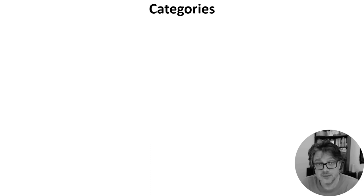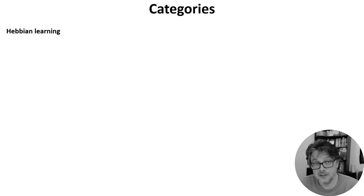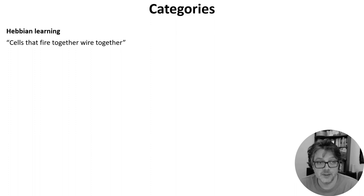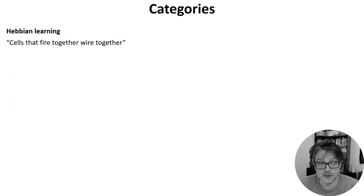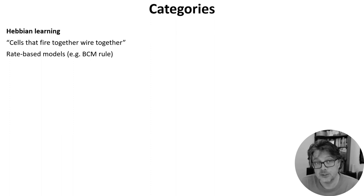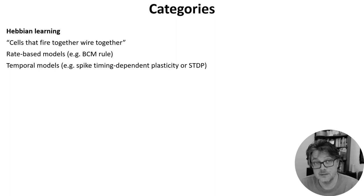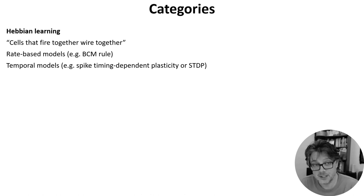Let's quickly look at some of the categories we need to keep in mind when discussing learning in the next few videos. One of the most important ideas is Hebbian learning. This is often summarized as 'cells that fire together wire together,' and this can be seen as encouraging associative or causal connections in the brain. One way to model this is with a family of rate-based models that use correlations in the firing rates of pre- and post-synaptic neurons. Alternatively, we can take timing of individual spikes into account, as in spike timing dependent plasticity, or STDP.